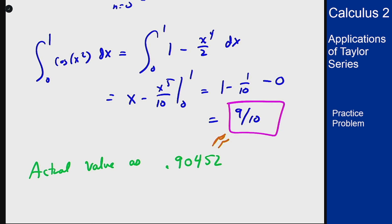Those are two examples of how you can use Taylor and Maclaurin series in a variety of ways to solve problems that normally you wouldn't think could use these methods. Both evaluating indeterminate limits instead of using L'Hôpital's rule, and approximating integrals, can be done using Taylor and Maclaurin series — providing a good approximation especially when using computers to solve these kinds of problems.